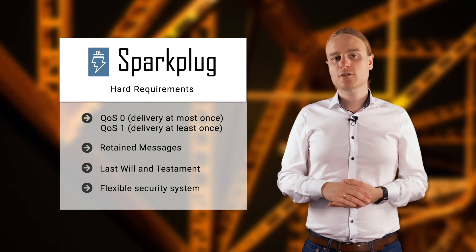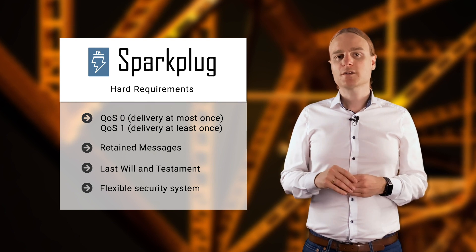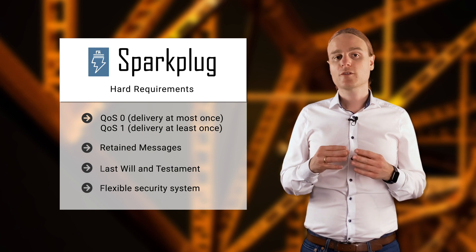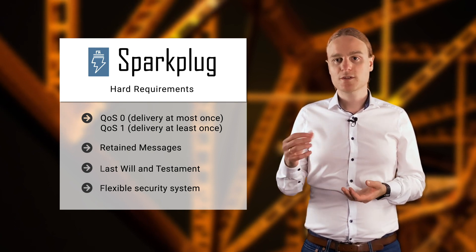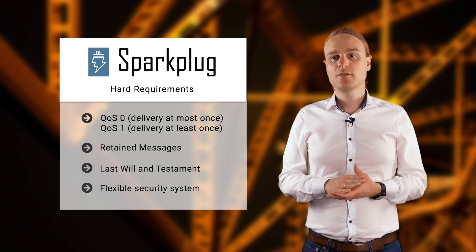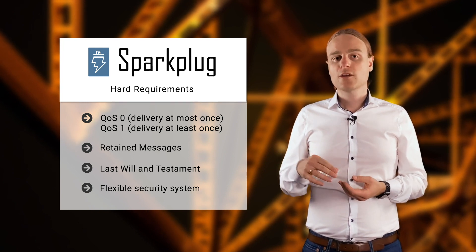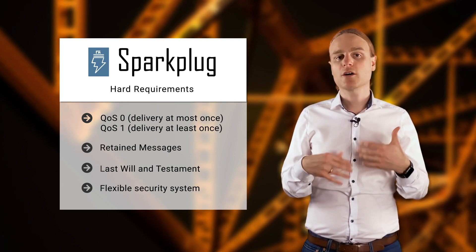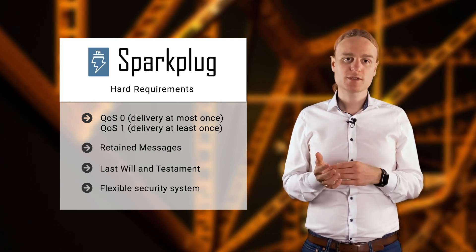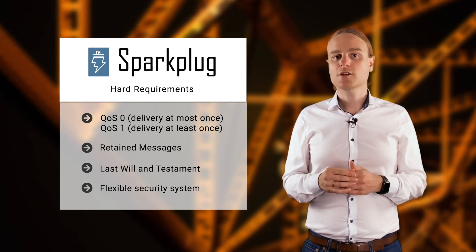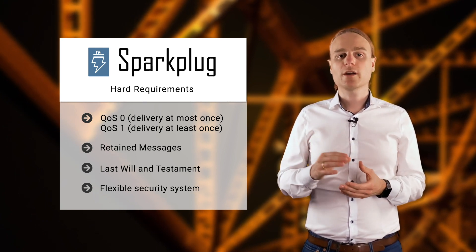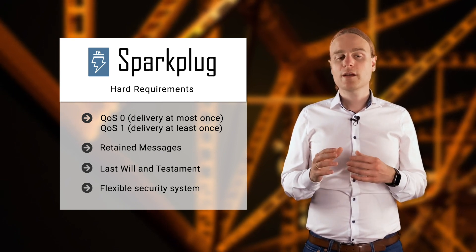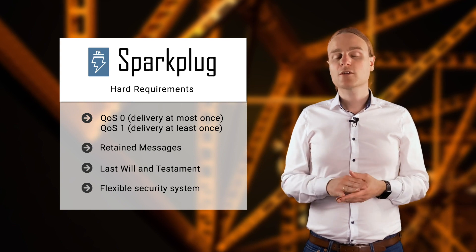For Quality of Service 0 and 1 support, your MQTT broker as well as your clients are required to support at-most-once delivery (QoS 0) and at-least-once delivery (QoS 1). You need both because data packets are sent with QoS level 0, but important state management messages are required to use QoS level 1. Make sure your MQTT broker and clients support these features.